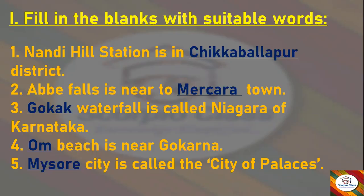Next — dash waterfall is called the Niagara of Karnataka. Answer: Gokak. Next — dash beach is near Gokarna. Answer: Om Beach. Next — dash city is called the City of Palaces. Answer: Mysore. So we have finished our fill in the blanks.